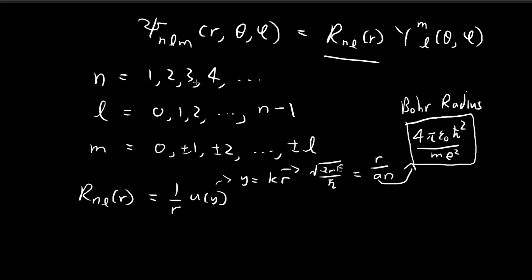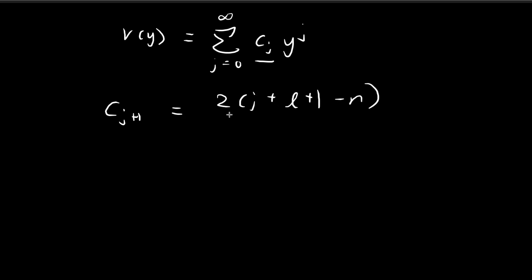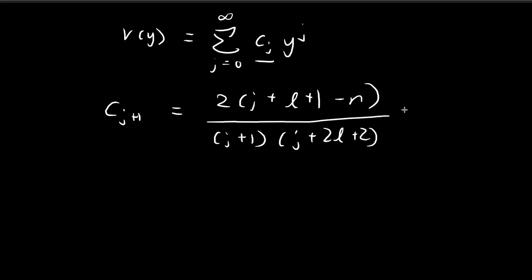y is indexed by n, so for every different choice of n, y is going to be different. Our radial component is (1/r) × u(y), and u(y) is given by y^(l+1) × e^(−y) × v(y). v(y) is a special expression equal to a summation, and the constants within this expression are related to one another by the recursion formula: c_{j+1} = [2(j + l + 1 − n) / ((j+1)(j + 2l + 2))] × c_j.